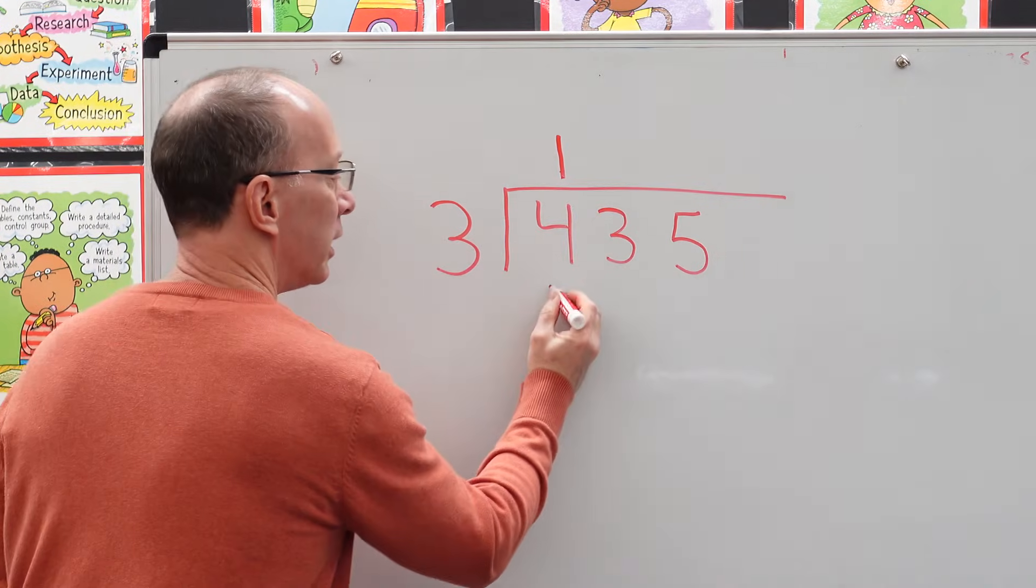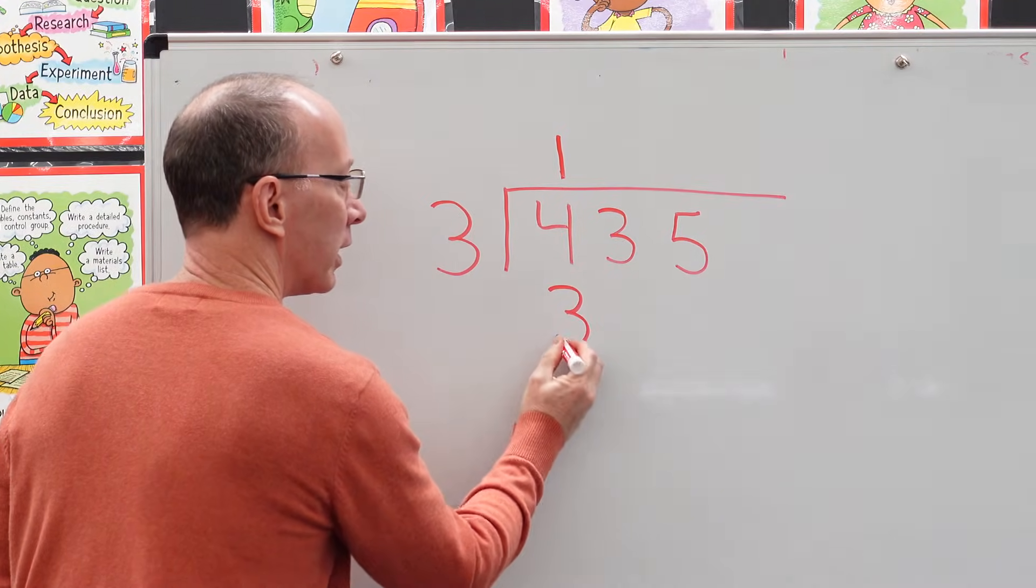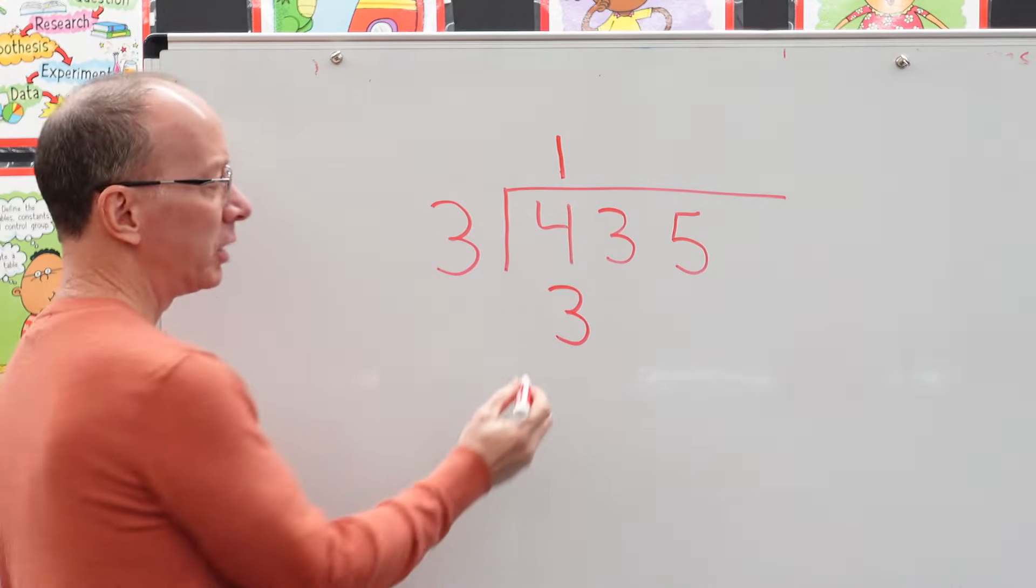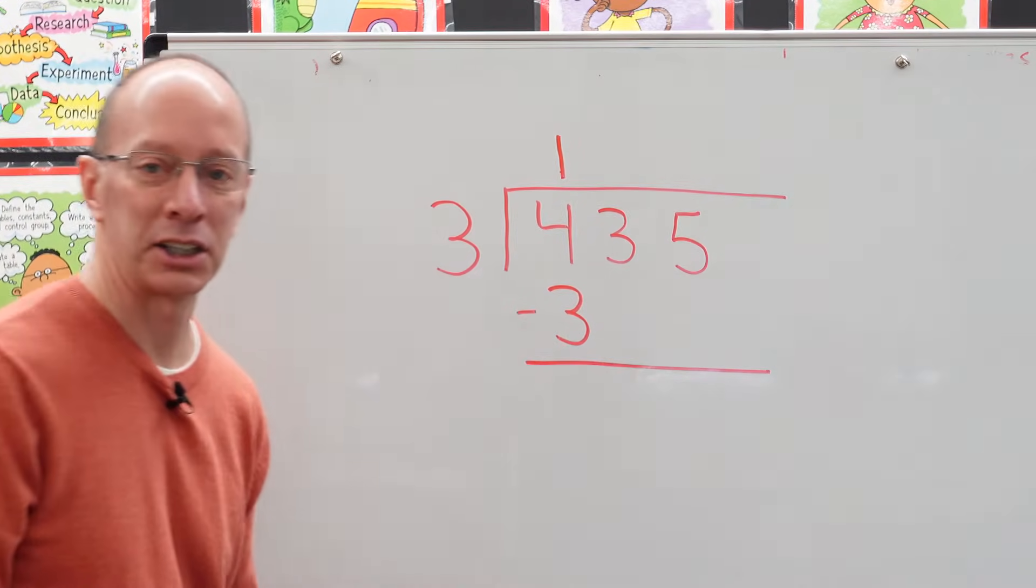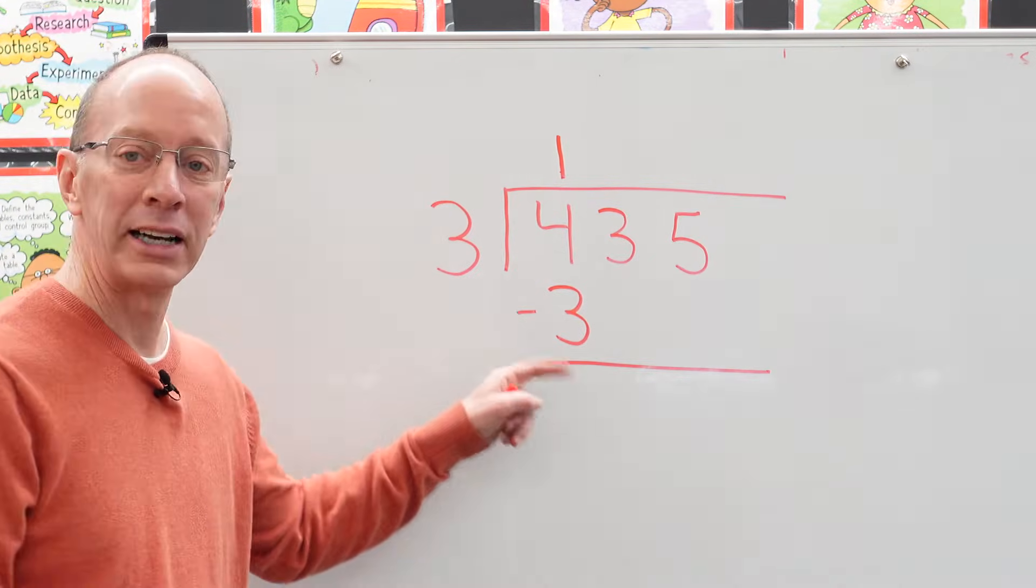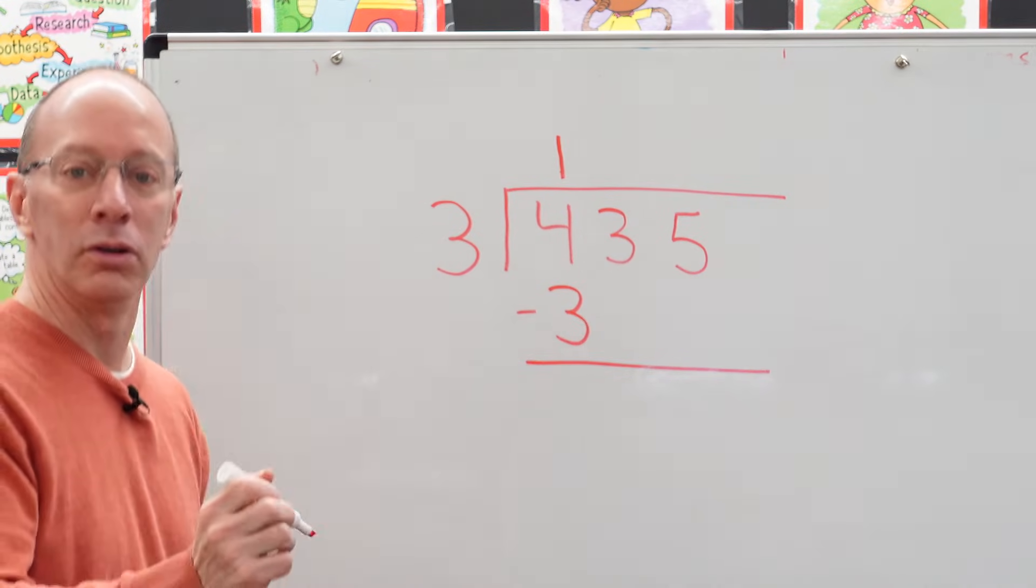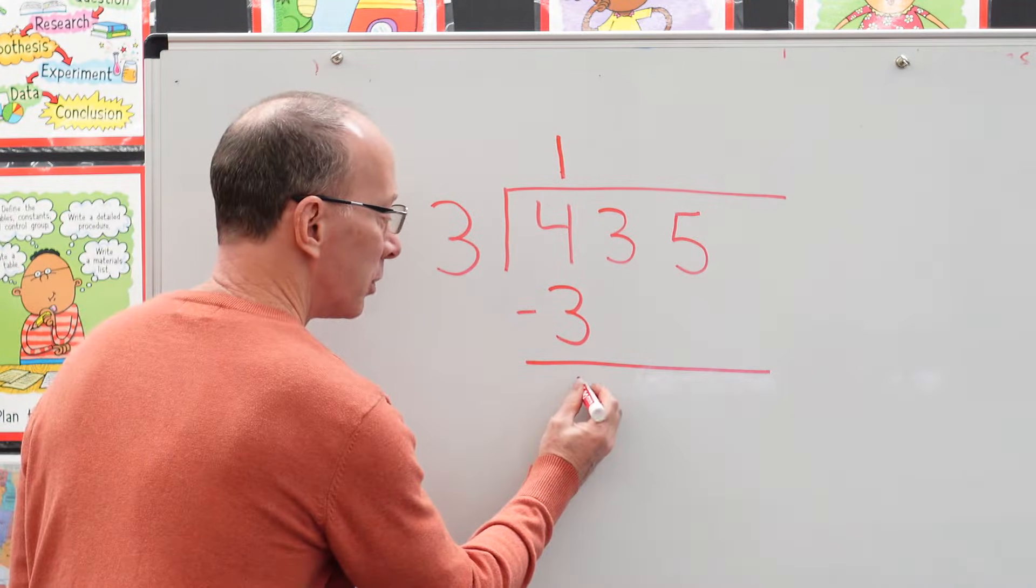So I go one times three, and I put the three right there. And now what I want to do is put a line underneath here, and I'm going to use subtraction. So four minus three is uno, right? One. So I put the one right here.